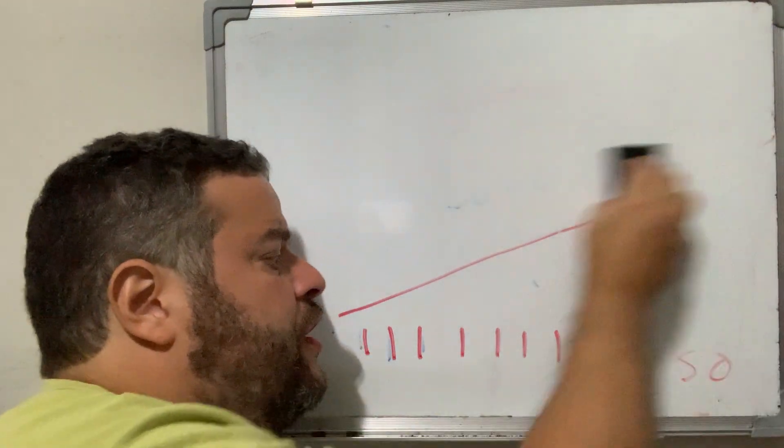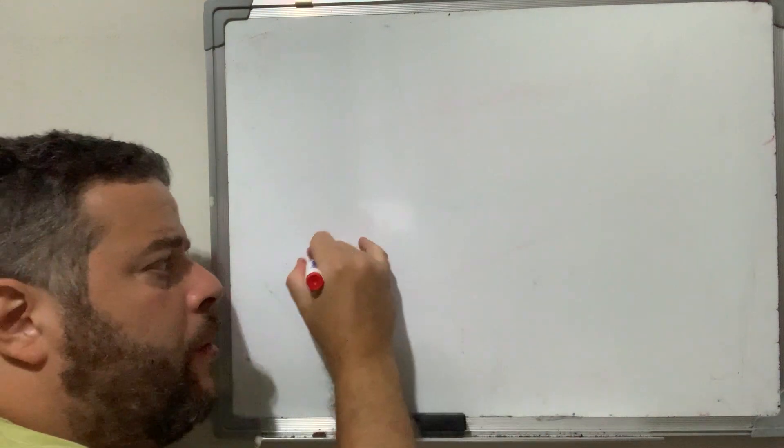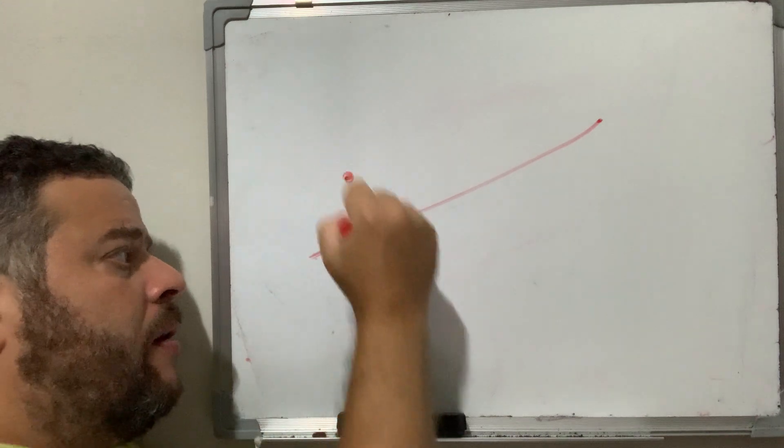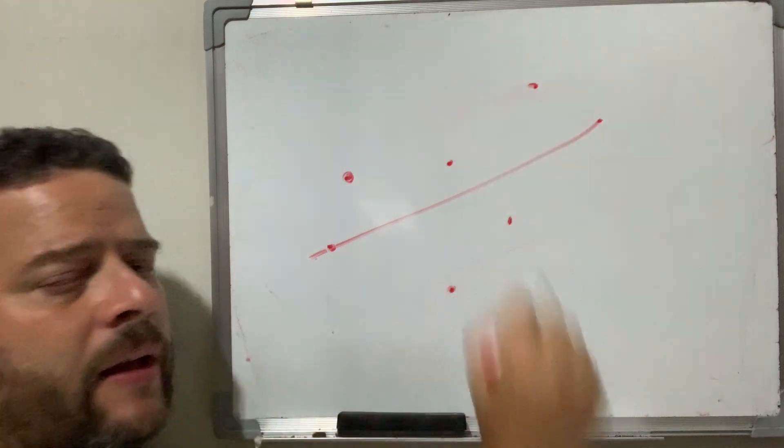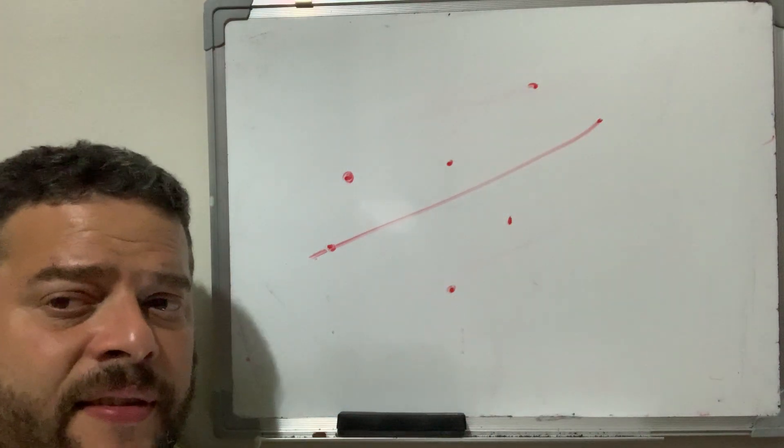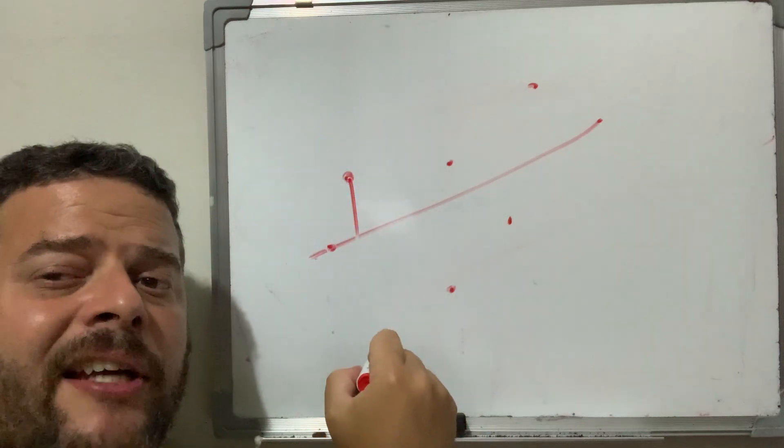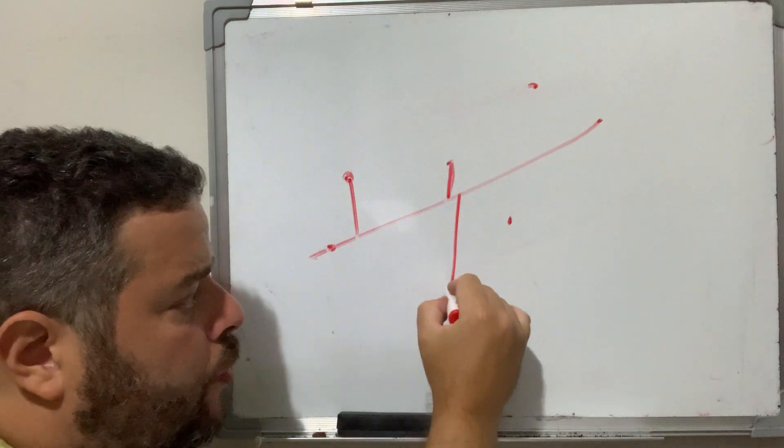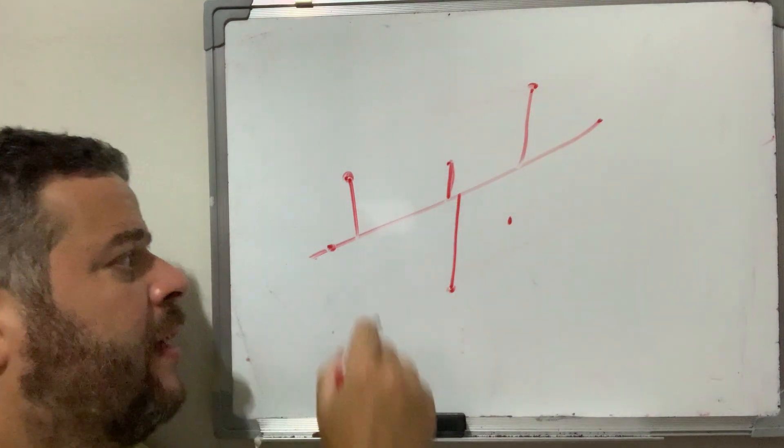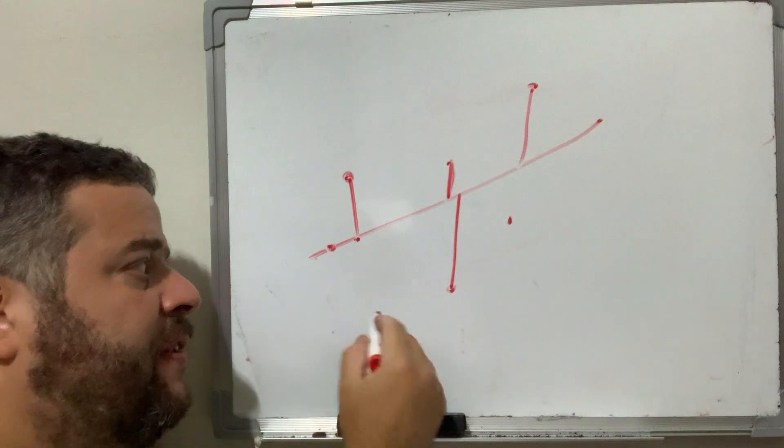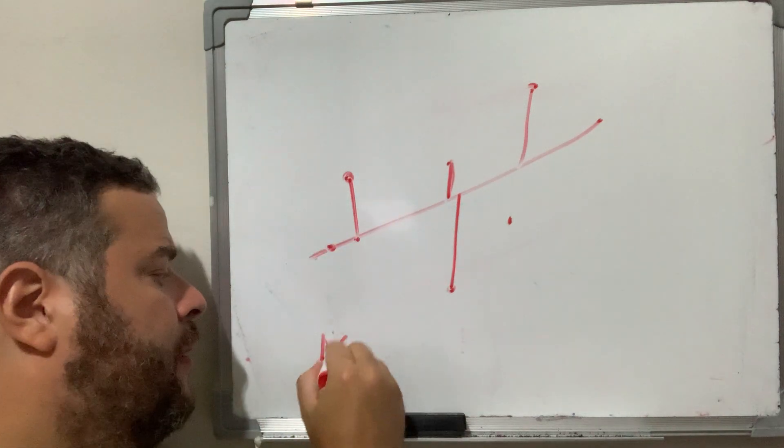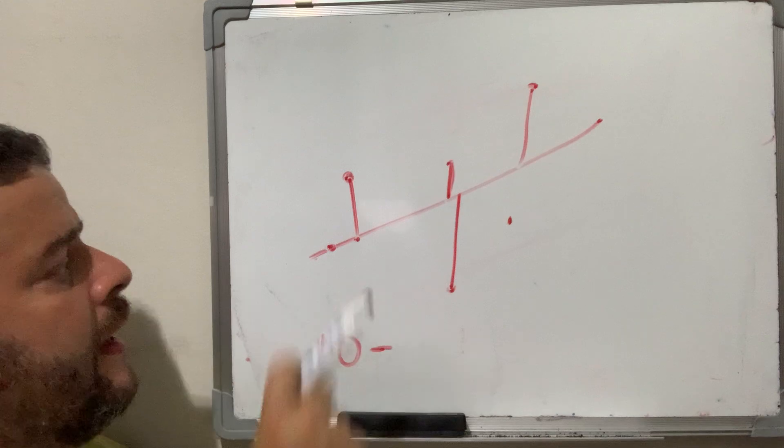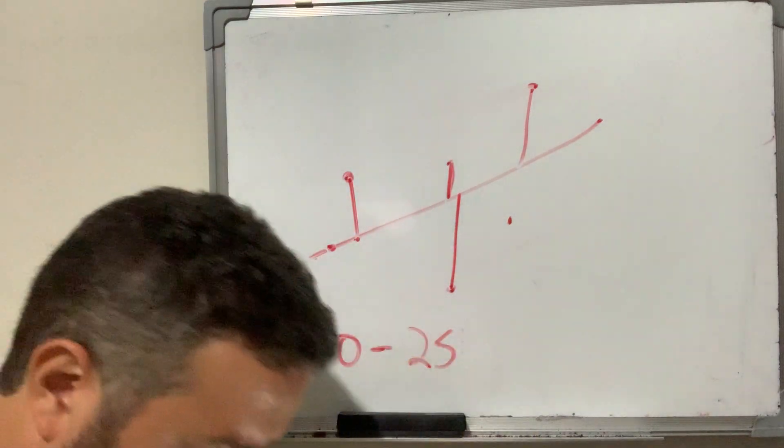And let's go over the definition of a residual. Pretty much, whenever you have a line of best fit or a regression line, some values will fall on the line, some values will fall above the line, some values will fall below the line. All the residual is, is the difference between the prediction and the actual value at that x value. So this would be the residual here, this would be the residual here. Let's say this prediction at x3, the prediction was 10, and the actual value is 25.